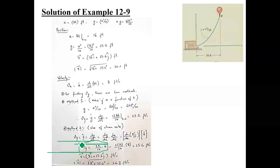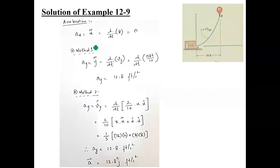Now coming to the acceleration term. When talking about rectangular components, the acceleration vector A = dV/dt, or equivalently A = ax·i + ay·j (in 2D), where ax, ay are the second time derivatives of x, y — that is, x-double-dot and y-double-dot. So the acceleration vector is x-double-dot·i + y-double-dot·j.